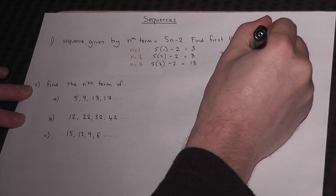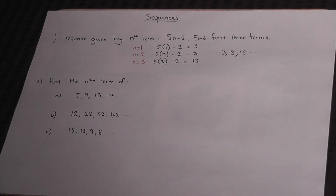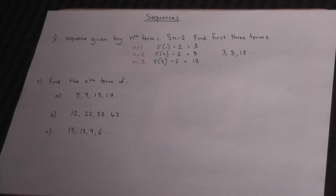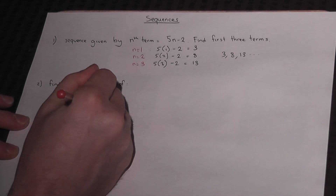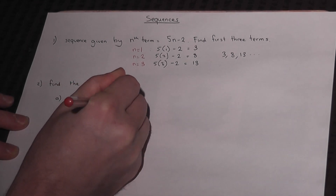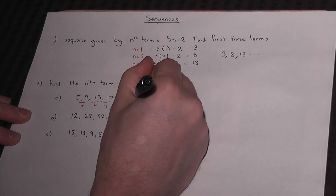Given a formula we can find any term we like. However, suppose we're given the sequence and the question says: what is the formula? There's a simple trick to do this. The first thing we do is look for the pattern in the numbers. This sequence goes up by 4 each time — plus 4 — so this means that the nth term is of the form 4n.